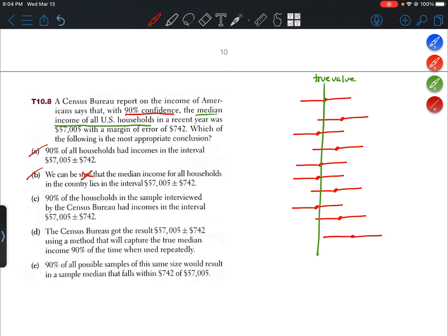C, 90% of the households in the sample interviewed by the Census Bureau had incomes in the interval. That's not really sounding like what we're looking for. The Census Bureau got the result $57,005 plus or minus $742 using a method that will capture the true median income 90% of the time when used repeatedly. All right, good. So 90% of the time used repeatedly capture the true value. That's our winner.